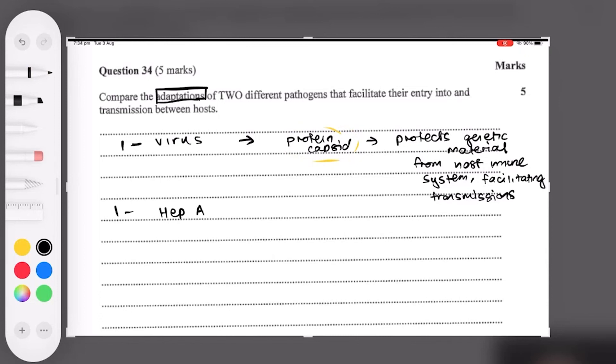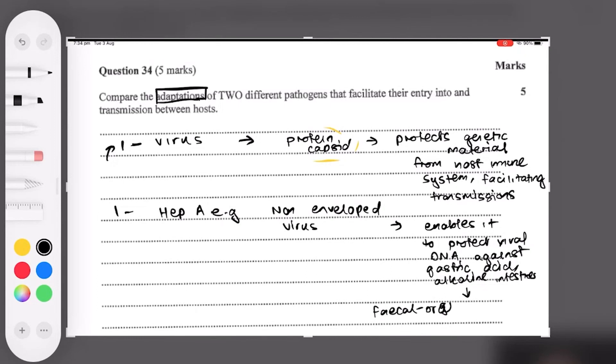So Hep A for example is a non-enveloped virus. This is the same, I'm just improving this one here. It's a non-enveloped virus which enables it to protect viral DNA against gastric acid, alkaline intestinal secretions, and it can cause therefore fecal-oral transmission. Do you see how now we're specifically linking it to transmission?